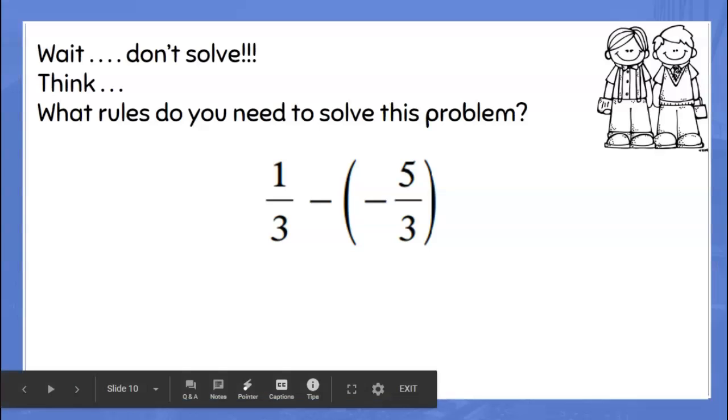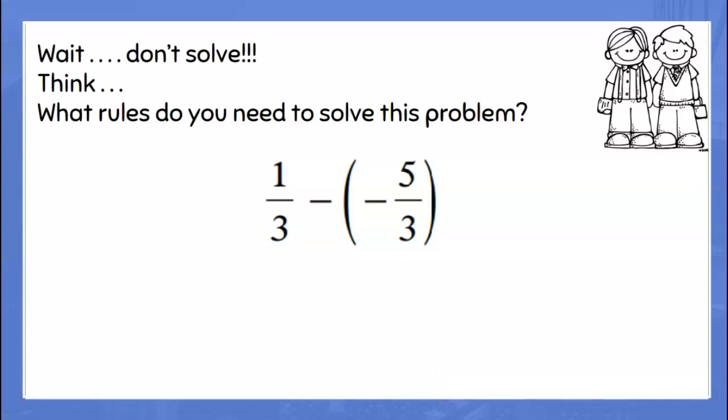On this problem, we're going to remember that when we see subtraction, we're going to add the opposite. So this will become one-third plus five-thirds. With fractions, we've got to make sure we have a common denominator, which we do, so we're just going to add numerators and keep the denominator.